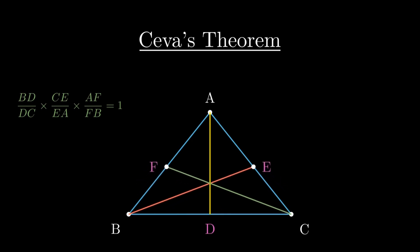If they are concurrent, then we will have BD by DC into CE by EA into AF by FB equals to 1. This is the claim of Ceva's theorem and let's look at a proof of this particular theorem.